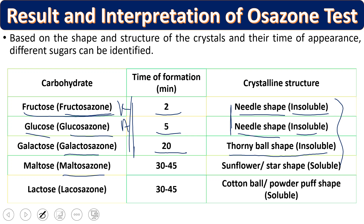Maltose gives maltosazone at 30 to 45 minutes — sunflower or star shape, water soluble. Lactose gives lactosazone at 30 to 45 minutes — cotton ball or puff shape, also water soluble. If no crystal forms after 30 minutes, remove the test tubes from the water bath, allow them to cool spontaneously, and observe every 5 minutes until crystals appear up to 25 additional minutes. Place a sample on a glass slide, cover with a coverslip, and observe under the microscope.